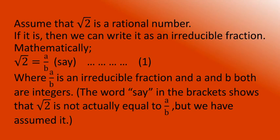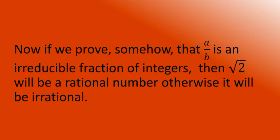Let's start the proof. Assume that square root of 2 is a rational number. If it is, then we can write it as an irreducible fraction. Mathematically, √2 = a/b (say), where a/b is an irreducible fraction and a and b are both integers. Note: the word 'say' in brackets shows that √2 is not actually equal to a/b — we have only assumed it. If we prove that a/b is an irreducible fraction of integers, then √2 will be rational; otherwise it will be irrational.